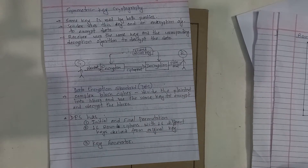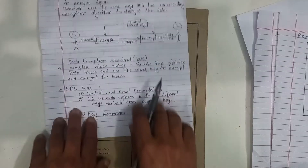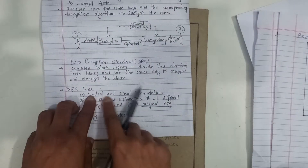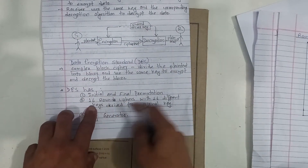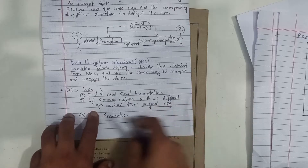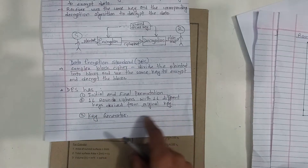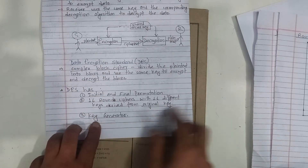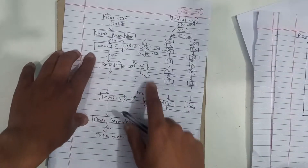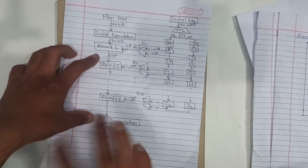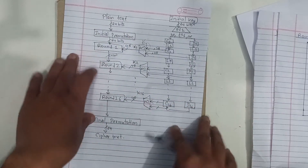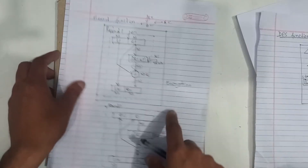Welcome back. In part 2 of DES we have the theory part. DES has 3 parts: Initial and Final Permutation, 16-round ciphers with 16 different keys derived from the original key, and a key generator. This diagram shows: plain text → initial permutation → 16 rounds → final permutation.